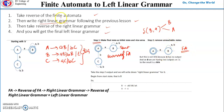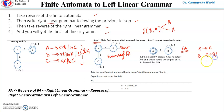For step two, we write the right linear grammar for this reversed finite automata. We have two states, A and B, so we write two non-terminals A and B. State A is the final state, so we write A → ε. From state B, for input A it can go to B itself or to A, and for input B there is a self-loop on B. So the right linear grammar is: A → ε, B → aB, B → aA, B → bB.